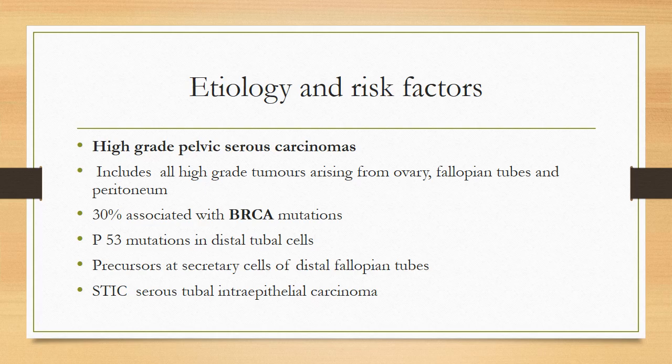It is now known that these cancers actually arise from distal tubal cells. There is mutation in the secretory cells of the distal tubal epithelium — P53 mutation — and precursors are the secretory cells called serous tubal intraepithelial carcinomas (STIC). They then involve the whole pelvis: fallopian tube, peritoneum, and ovaries.